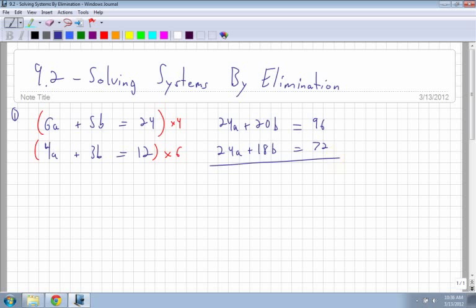Next thing I do is I subtract the two equations. So when I subtract, you have to make sure that you're subtracting the entire equation. Everything. The a's, the b's, and the numbers. And remember, I'm subtracting. So, 24 minus 24 is 0. 20 minus 18 is 2b. And 96 minus 72 is 24. Solve for b by dividing by 2. So you get b is equal to 12.